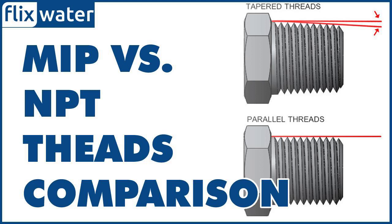MIP fittings are better for high-pressure systems than NPT threads. NPT fittings can't withstand a lot of pressure — otherwise they leak — so they're mostly used in residential plumbing and gas pipes. You might see them around your shower pipes or gas-powered grill.